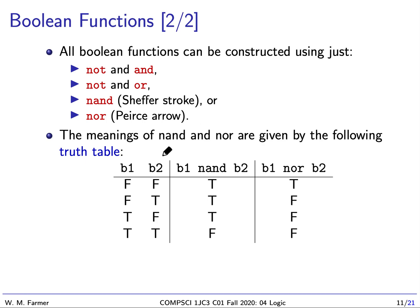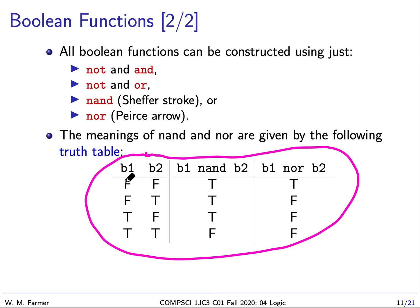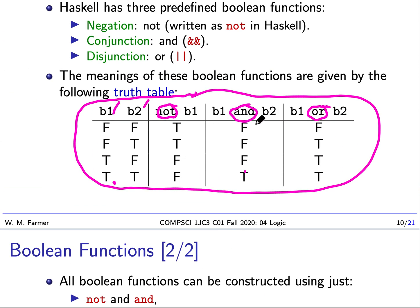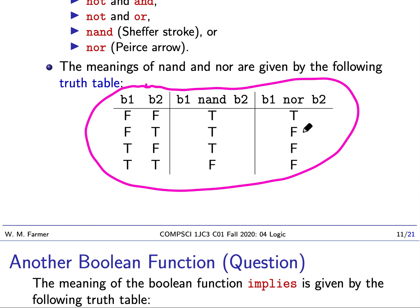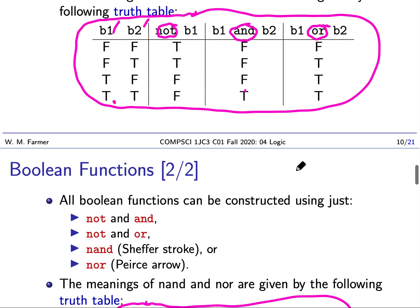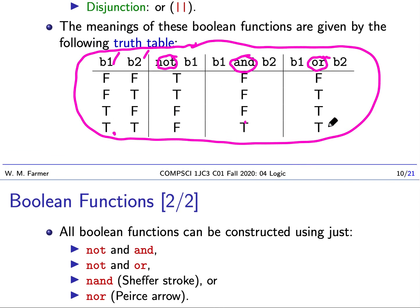The meanings of NAND and NOR are given in a truth table with all possible value combinations for B1 and B2. B1 NAND B2 is false only if both B1 and B2 are true; otherwise it is true — giving values true, true, true, false. This makes sense since NAND is NOT AND, and AND gives false, false, false, true. Similarly, NOR gives true, false, false, false, which is the negation of OR's false, true, true, true.